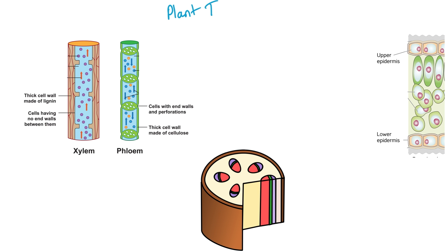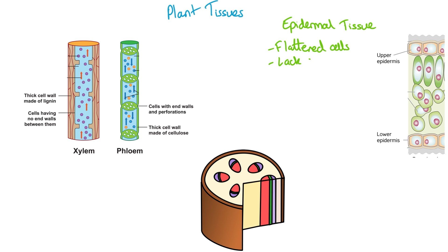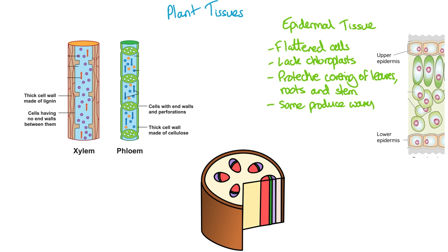We also need to know some plant tissues, starting with epidermal tissue. Just like the epidermis or skin layer in animals, this is the external layer in plants and can be seen at the top and bottom of leaves. The tissue has flattened cells that lack chloroplasts, so they do not carry out photosynthesis, and they provide the protective covering of leaves, roots and stems. Some of these cells produce a waxy cuticle layer that sits above them, helping to maintain the plant's waterproofing and reduce water loss.